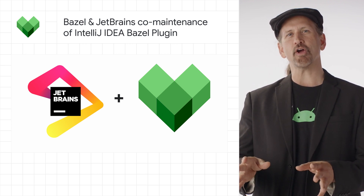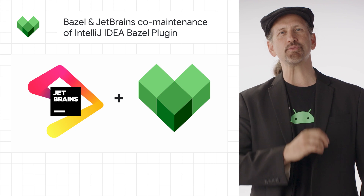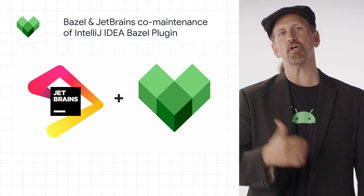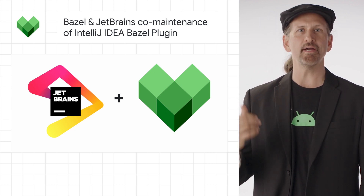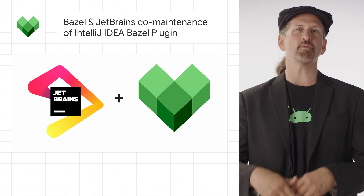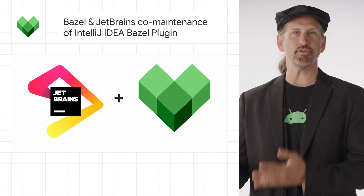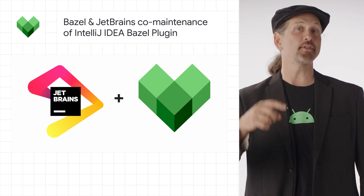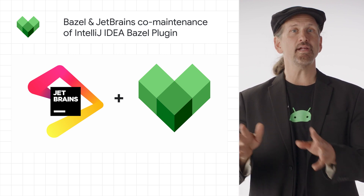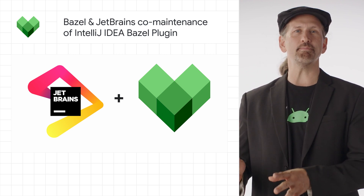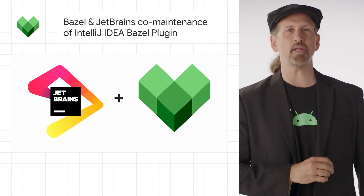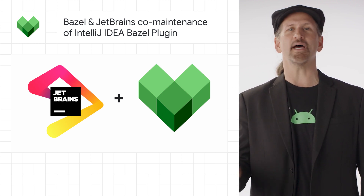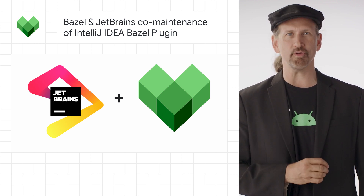This new maintenance structure enables faster review and merging of developer requests, such as support for Scala, and support for more contributions to and iteration of the plugin. The link below includes more information, including how to join the Bazel IntelliJ Plugin Google Group to discuss your feature request ideas and contributions.